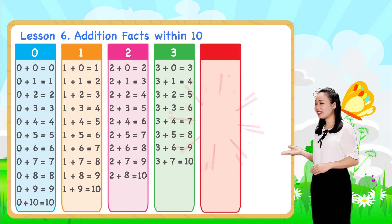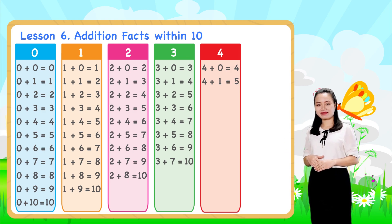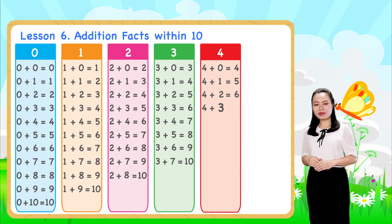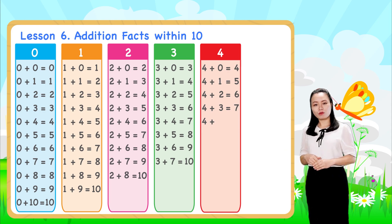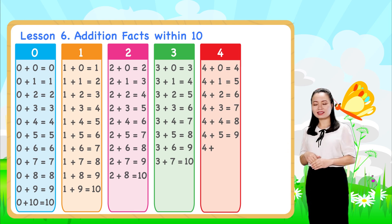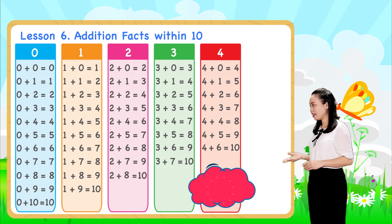Next, look at the fours table. We already learned these addition facts. Let's continue. Four plus two equals six. Four plus three equals seven. Four plus four equals eight. Four plus five equals nine. Four plus six equals ten. We'll stop here for now.